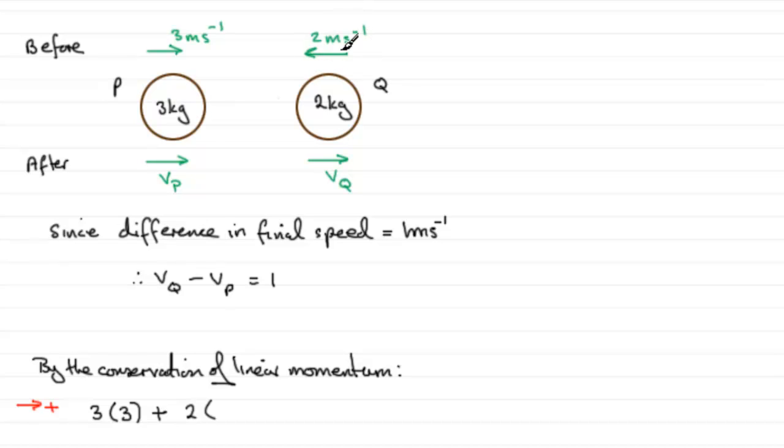Then we add the momentum of Q, so mass is 2 times the velocity. But you'll notice this time it's moving with a speed of 2 meters per second but to the left, in the opposite sense to the plus, so it's going to be minus 2. So that's the total momentum before impact.